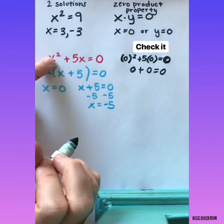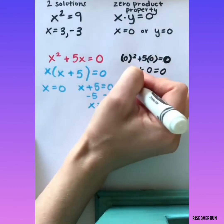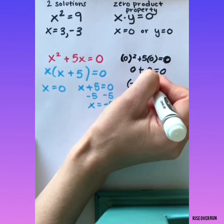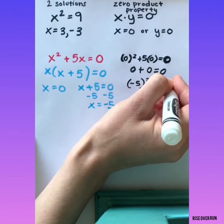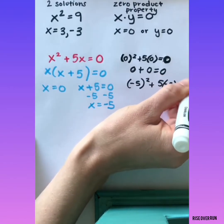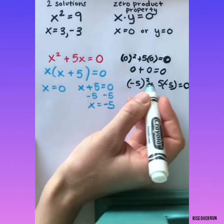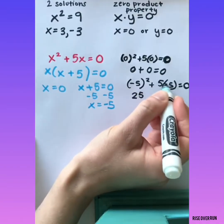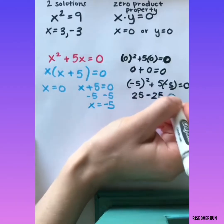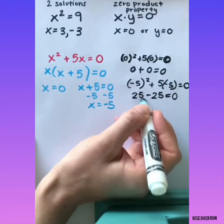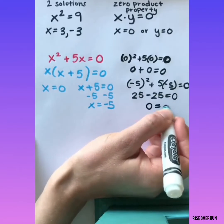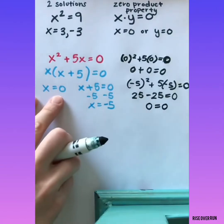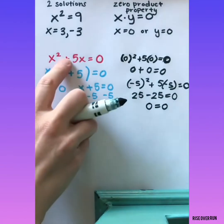Now let's plug in a negative 5 for both x's. Negative 5 times itself is positive 25. 5 times negative 5 is a negative 25. So 25 minus 25 is 0. So you can see that both 0 and negative 5 work in this equation.